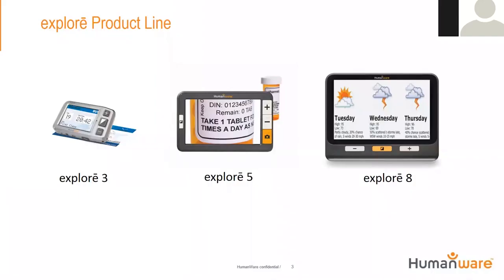So the product line — just a refresher — what we have: the Explorer 3, the Explorer 5, and the Explorer 8. So we have a 3-inch, a 5-inch, and an 8-inch.